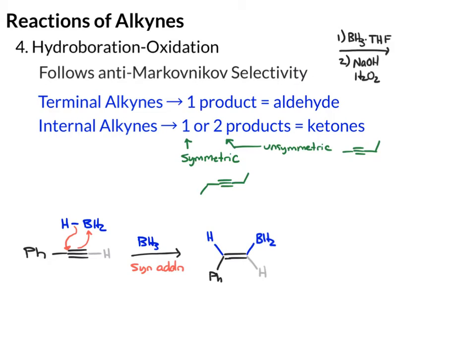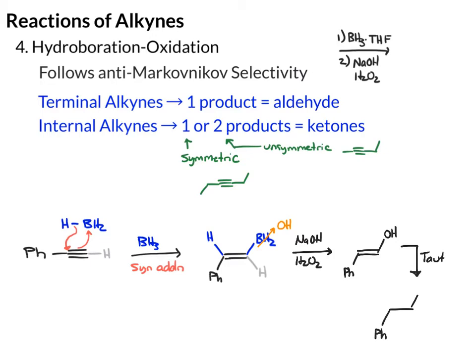From there, we'll add the oxidizing agents NaOH and H2O2. We won't cover the mechanism for this step, but suffice it to say that this oxidizes the BH2 to an OH. When we draw the product, we end up with an enol. Enols tautomerize, so we make the double bond a single bond and the OH a double bond O. We're done — we have an aldehyde product.